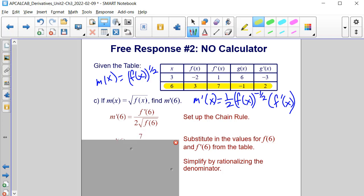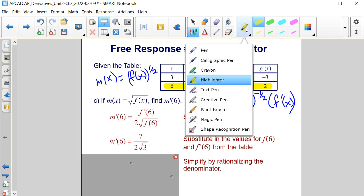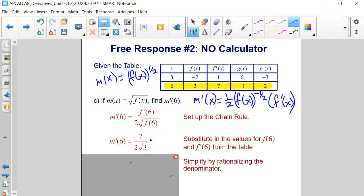So we have 7 for f prime of 6 divided by 2 times the square root of f of 6, which is 3. So we have 2 times the square root of 3. Now, we can't have a square root in the denominator, so we need to rationalize it. And to do so, we have to multiply the top and bottom by square root of 3 over square root of 3. So we'll have 7 square root of 3 over 6 as our final answer.